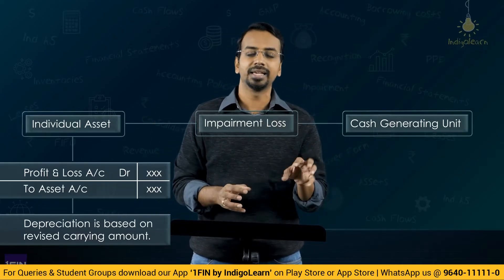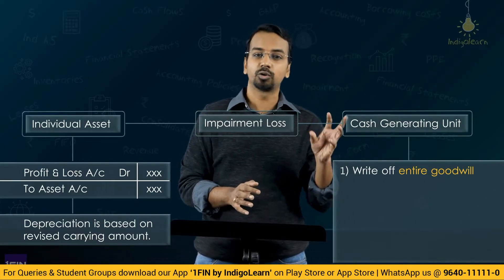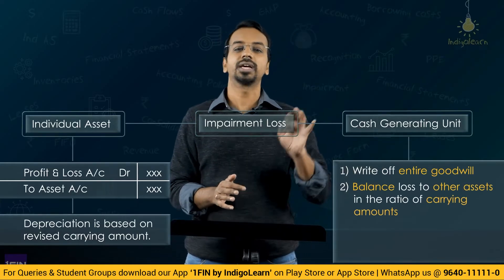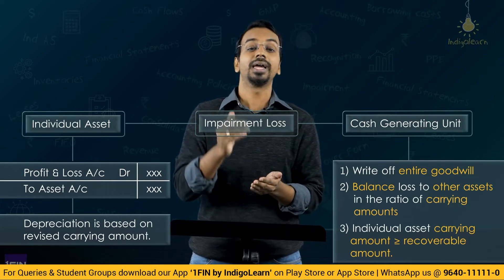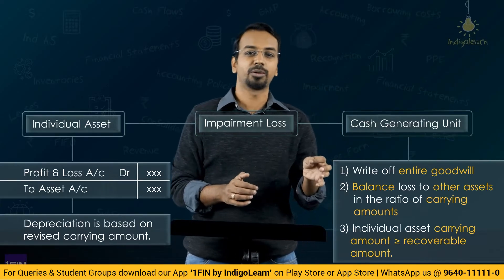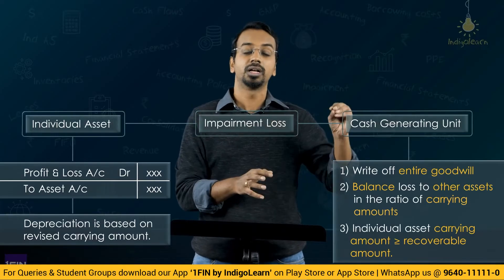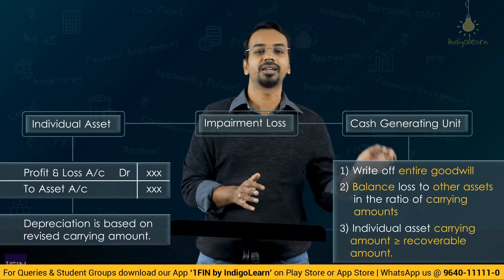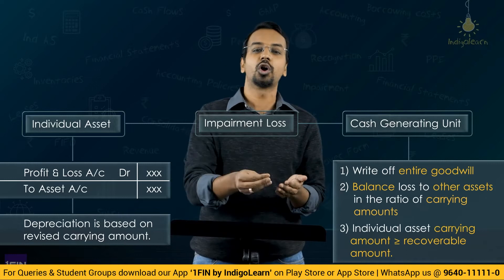If impairment pertains to a CGU, the impairment loss will first be consumed by goodwill — you will credit goodwill and debit the P&L. Balance losses, if any, will be allocated to other assets in the CGU in the ratio of their carrying amount. While doing this, you must ensure that an individual asset inside the CGU should not be shown below its recoverable amount. If after charging its share of impairment loss a specific asset has fallen below its recoverable amount, restrict the impairment loss so the carrying amount does not fall below recoverable amount. Any balance loss left over will be allocated to other assets. You will also not show it at a negative value.